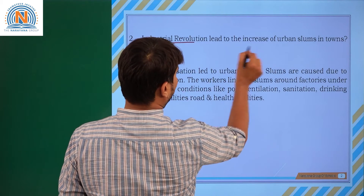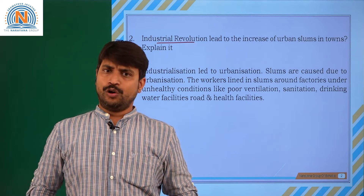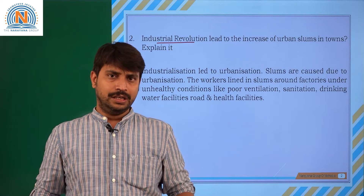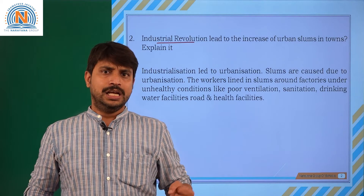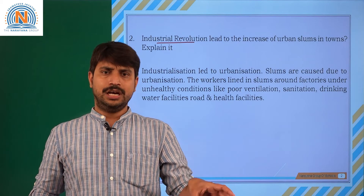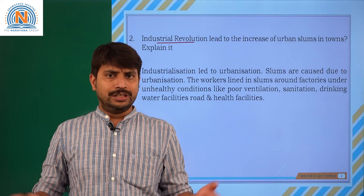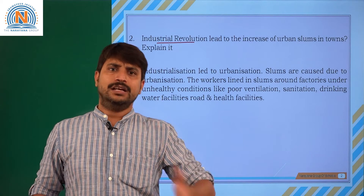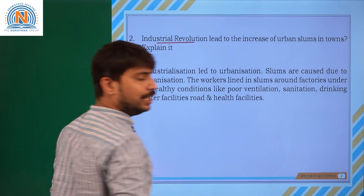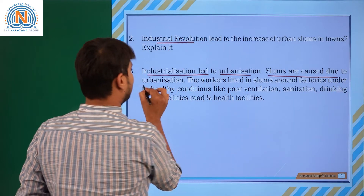The Industrial Revolution led to the increase of urban slums in towns — explain it. For example, in your surroundings, if a company is established, automatically people who work in that factory develop houses nearby, then shopping malls and market yards develop. This indicates the increase of urban slums in towns. So industrialization led to urbanization, and slums are caused due to urbanization.